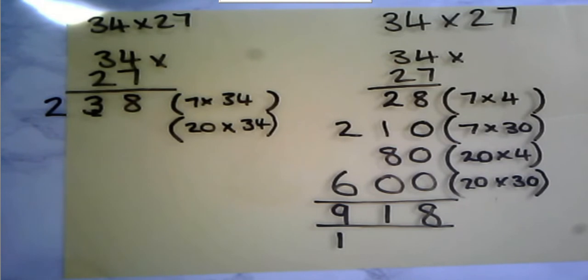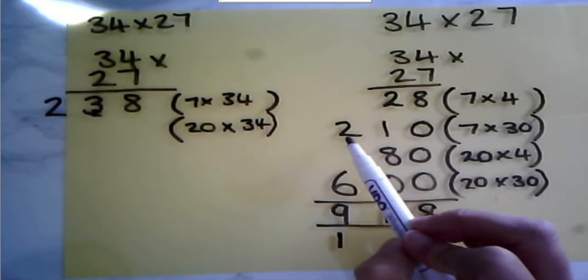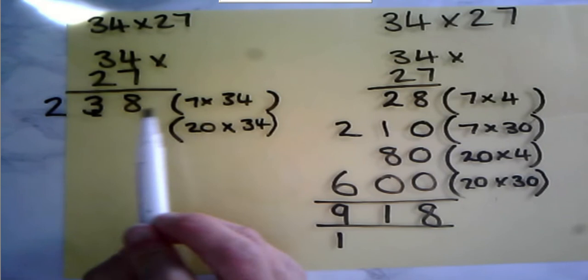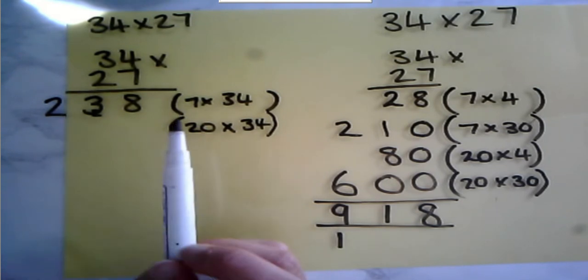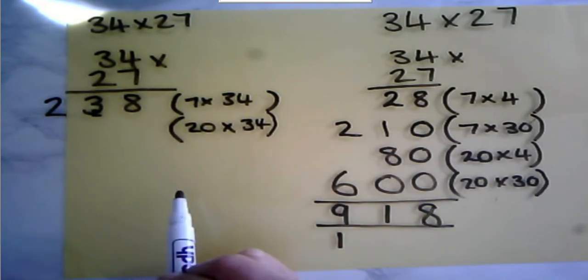I'm hoping that you've spotted that my 7×4, my 7×30 is this calculation here, and that 210 add 28 gives us 238. So these two combined into that one row.